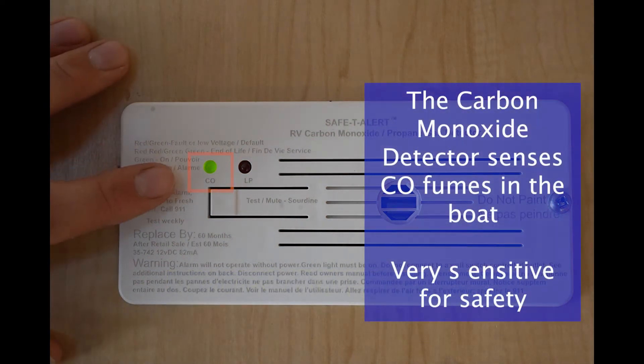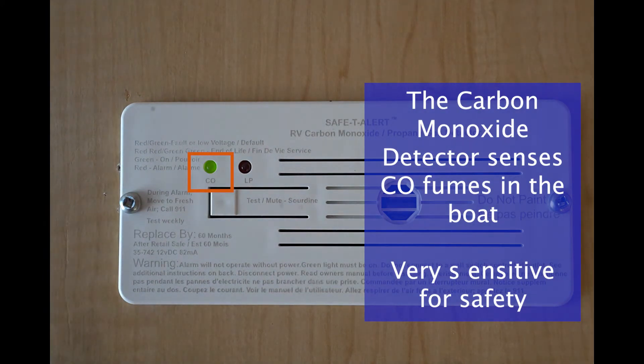First is the CO detector. That one detects carbon monoxide fumes within the boat. They're very sensitive sensors and go off very easily if there's any little bit of carbon monoxide gas inside the boat.